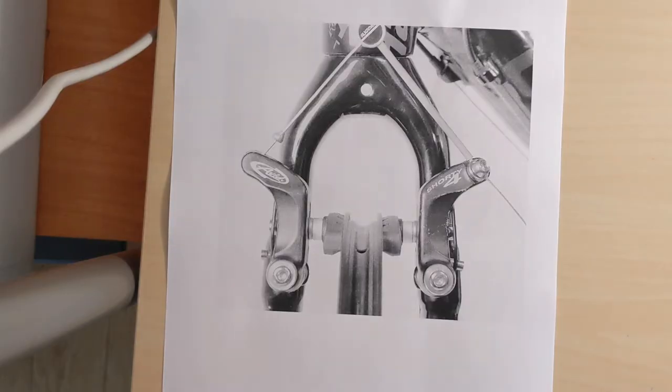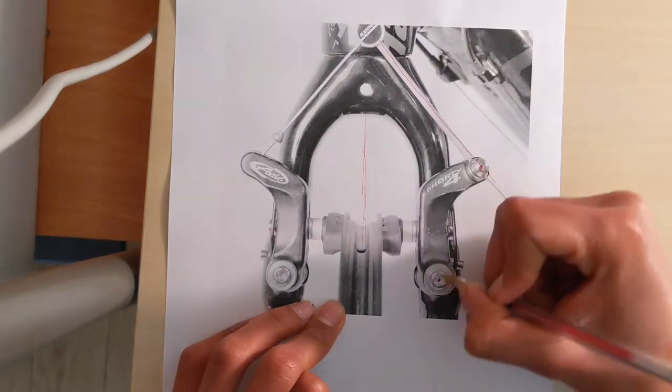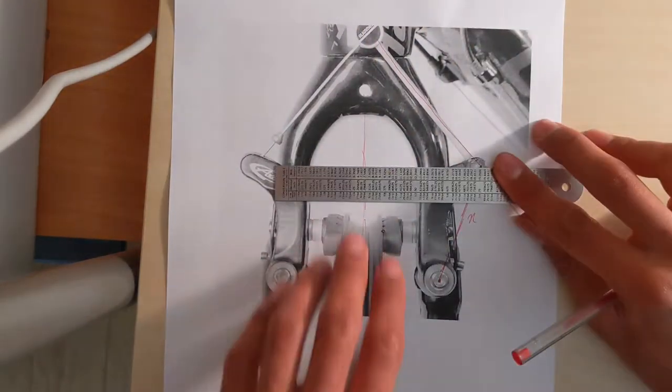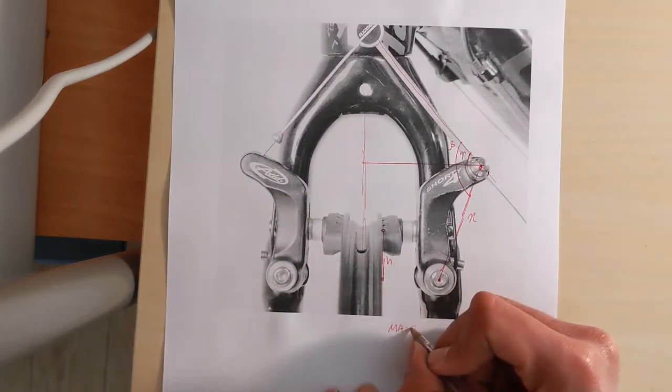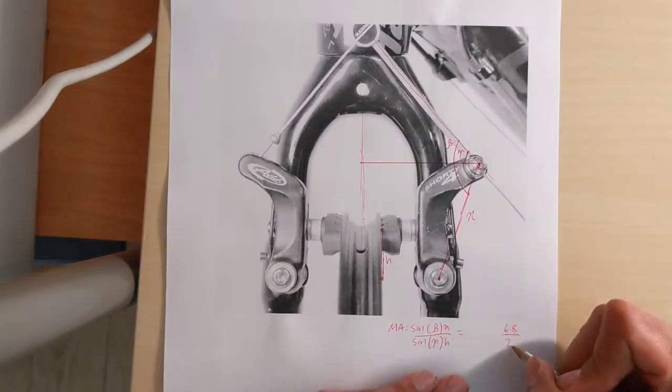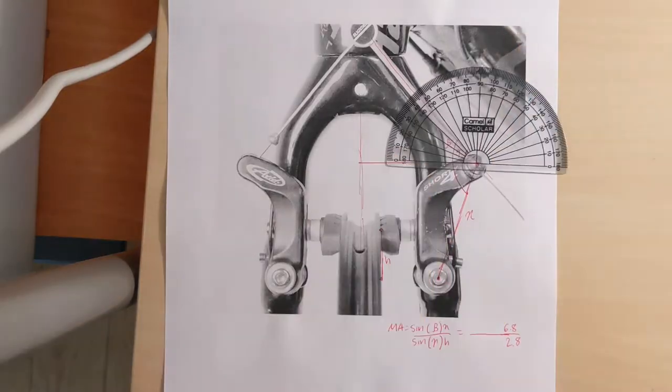Okay, let's try some different brakes. So we're going to do the same calculations on a pair of low profile Avid Shorty 4s. But notice two differences: A, that gamma is now a much larger fraction of beta, and B, that h is now much smaller than x.